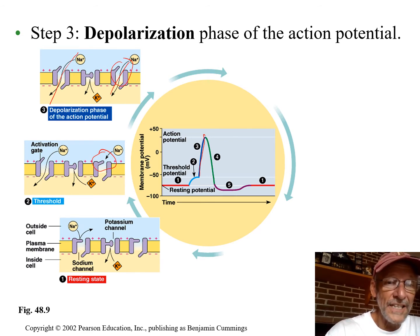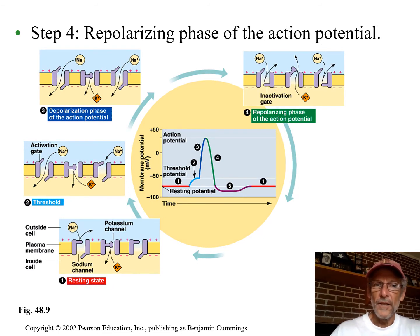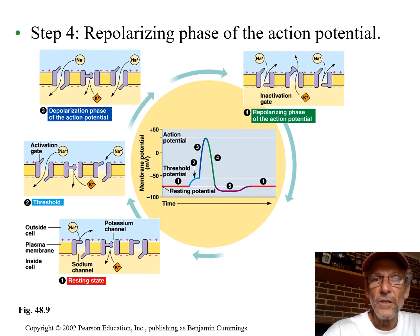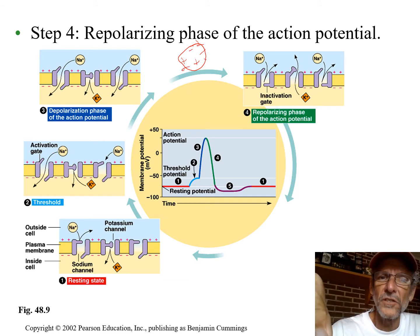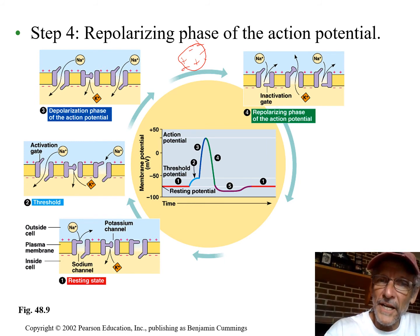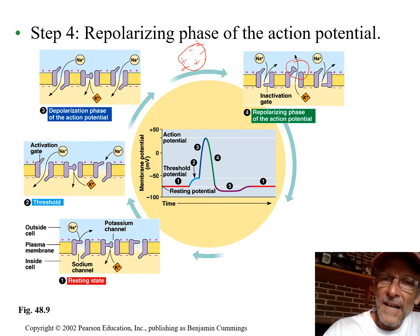The spike goes into the positive region — now the inside is more positive than the outside. This is where the potassium channels come into play. So far the potassium gates have been closed, but now this reverse polarization — positive inside compared to outside — opens the potassium gates. The potassium gate is a protein with positive and negative charged areas from polar covalent bonds. When there's enough positives inside, it tugs the gate open through electrostatic attraction.